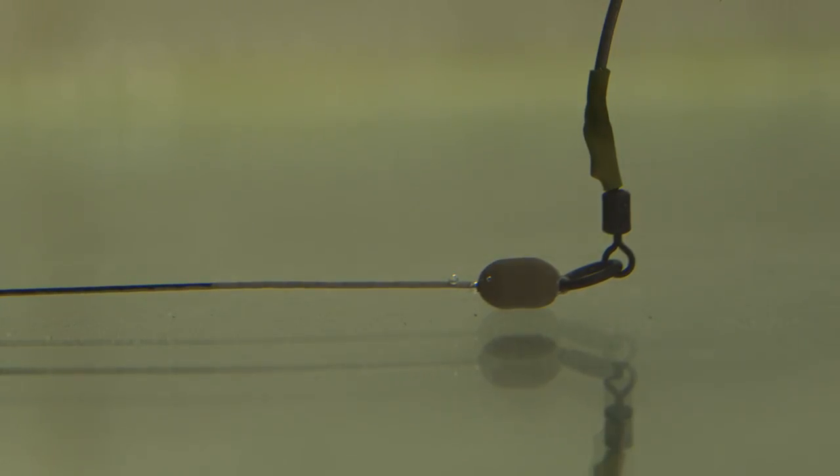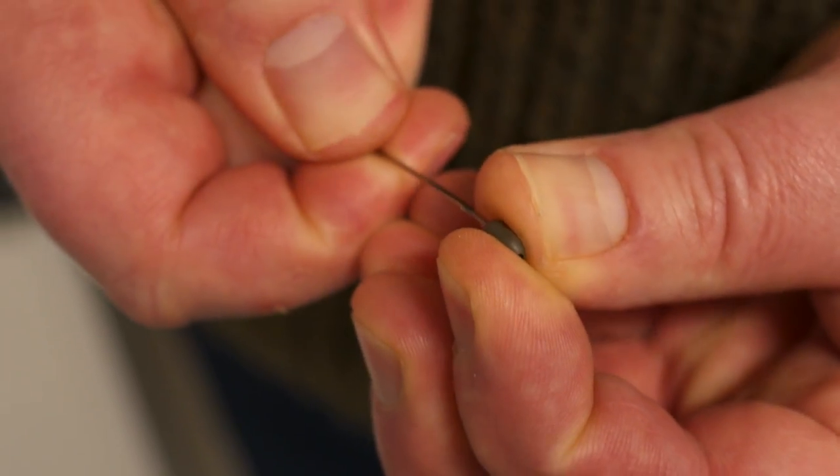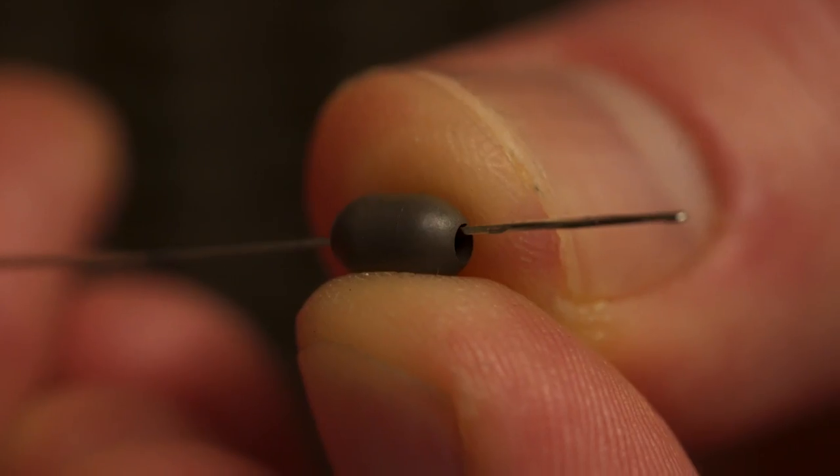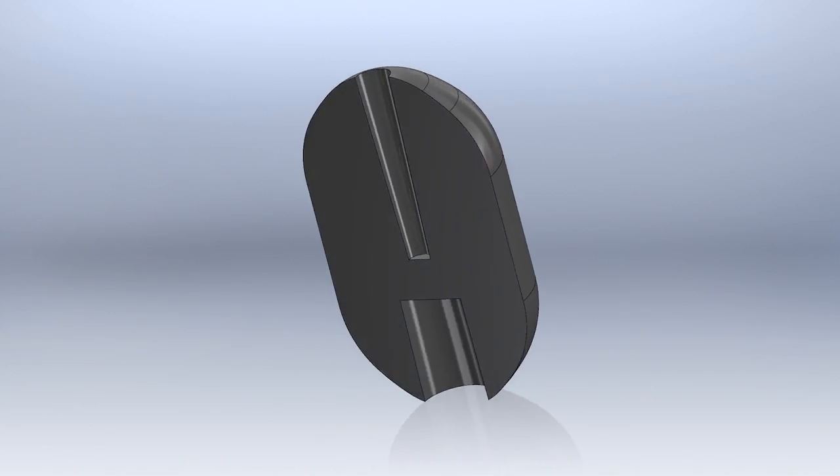Critical balancing can be achieved easily without having to mould putty. The beads are designed with a central membrane, so they have to be pierced with a splicing needle or a fine bait needle. This membrane means they're a tighter interference fit on the hook link.